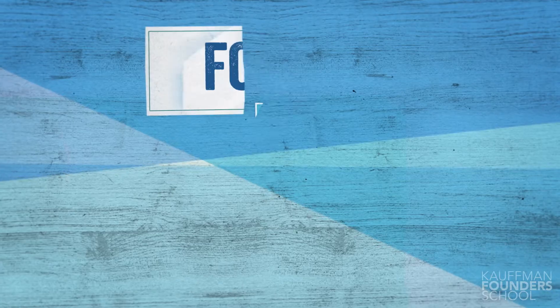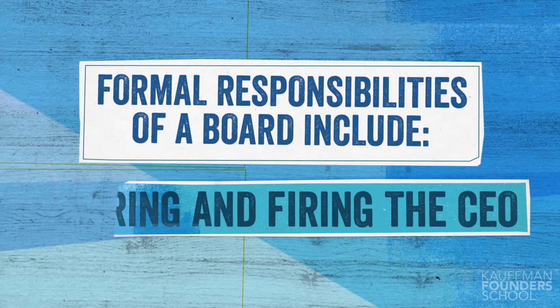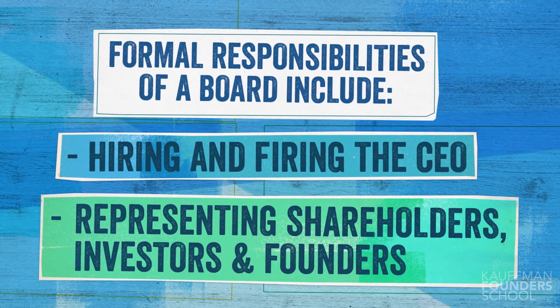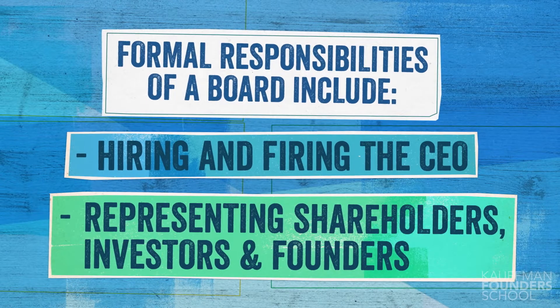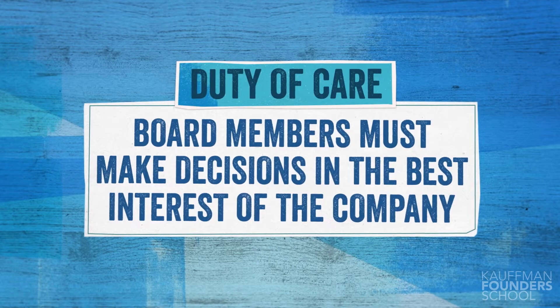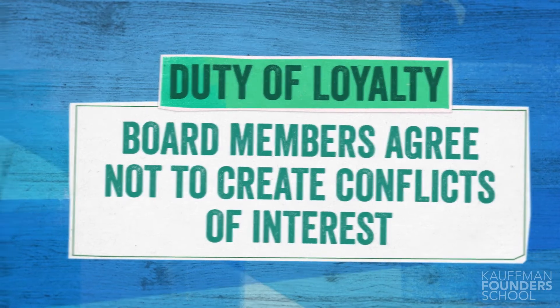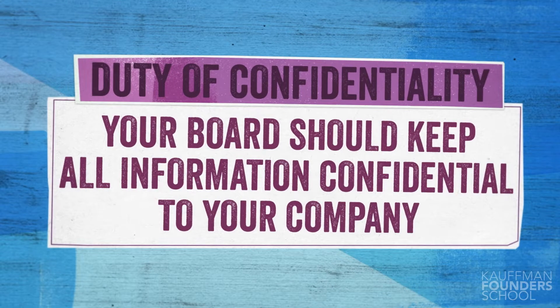A board of directors is a formal construct for every company that essentially provides governance for the company. A board has a number of different functions and responsibilities. Think about them breaking into formal and informal. The formal responsibilities include things such as hiring and firing the CEO, representing shareholders, representing the different investors in the company, and representing the founders. You have a duty of care to do things in the best interest of the company, and a duty of loyalty not to create conflicts between you and the company, and to keep any board information confidential.